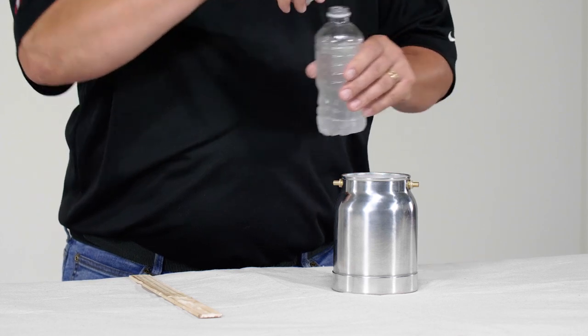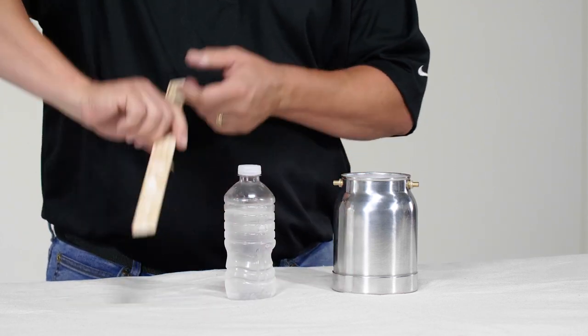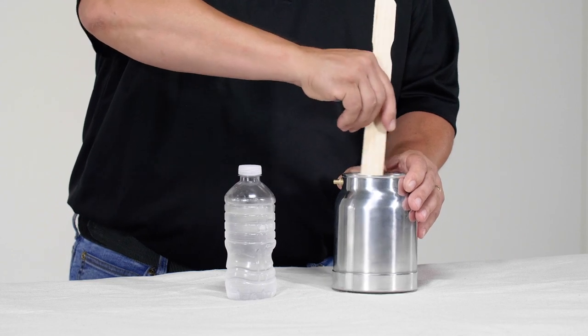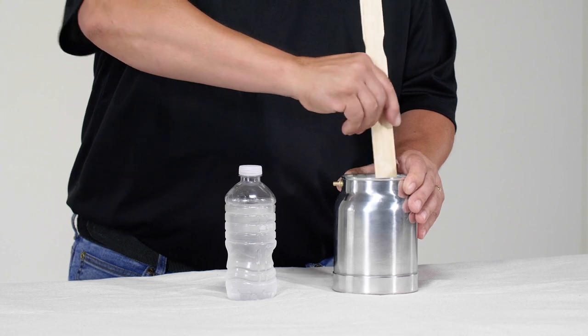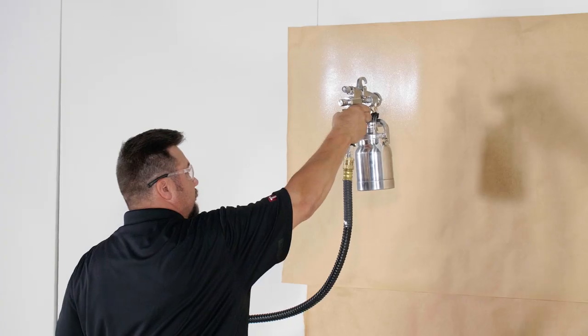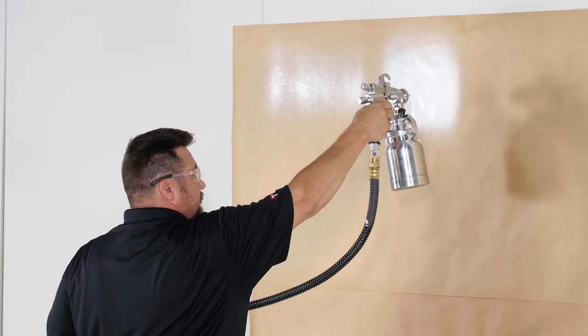Recognize that even with the correct needle size, you may still have to thin the material some to get a complete atomized pattern. Do this in increments and retest until you find the correct ratio without affecting the final finish. Here is the same number three thinned five percent.